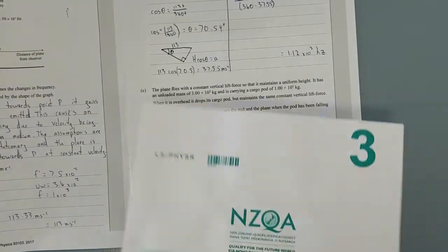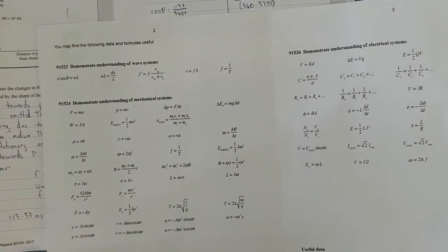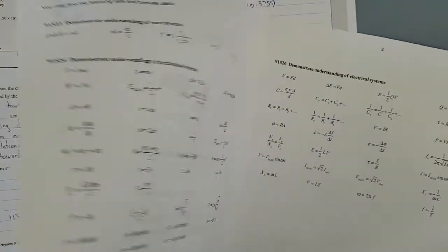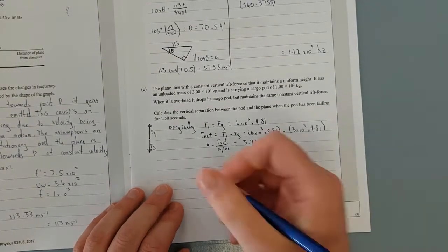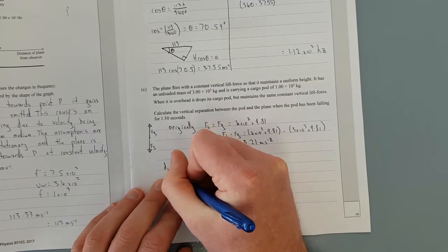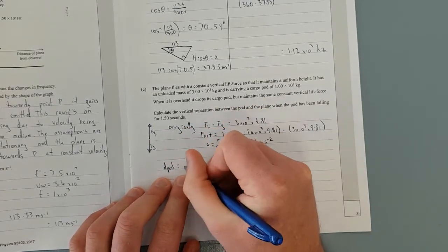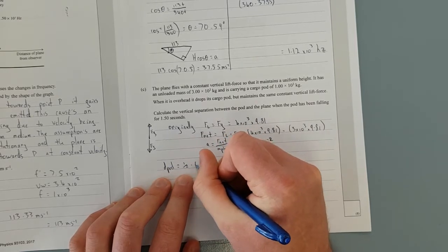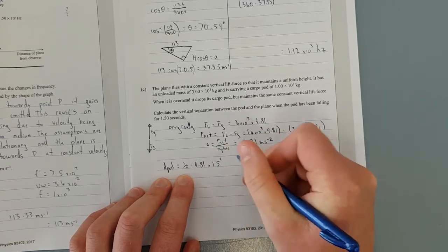Now let's simply plug and chug. It's a level 2 formula, plug and chug into the distance equals vit plus half at squared. You should know that by heart. So we're going to put d pod, find the distance of the pod from where it was dropped. Half minus 9.81 times 1.5 seconds squared gives me minus 11.036 meters.